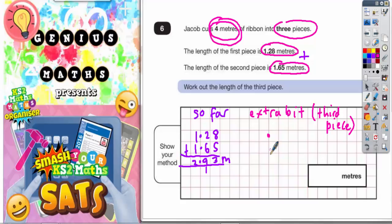So if I put my decimal points in first, so my 4 meters can go there and my 2.93 meters can go underneath. So I need to subtract this. Now remember, because we've got some gaps here, we can fill those gaps in with zeros. So it's like saying 4.00 meters take away 2.93 meters.